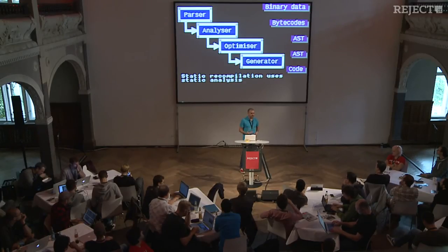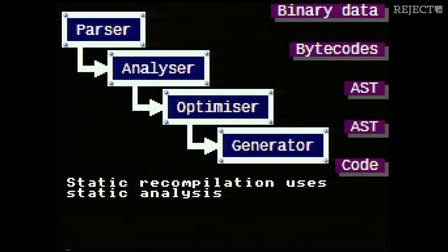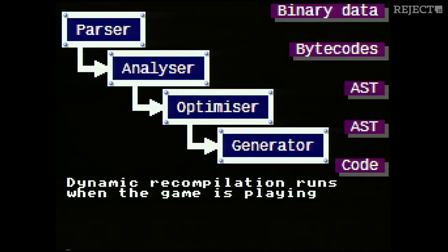There are two different types of recompilation: static and dynamic. Static recompilation, as the name implies, uses static analysis — it's done before the game starts. On the other hand, dynamic recompilation works at runtime: when the game is playing, it recompiles on the fly.